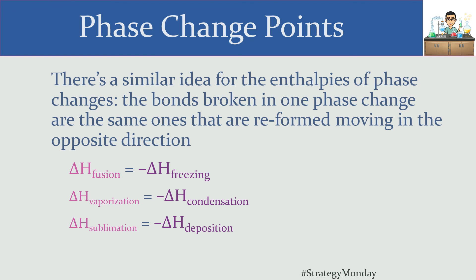Anytime you have opposite phase changes, the thermodynamics are equal in magnitude but opposite in sign. On an exam, if you're given the delta H of fusion and need the delta H of freezing, you don't need it given explicitly — it's the opposite in sign with the same magnitude. That's a bit of strategy you can use to conceptualize a lot of what's happening.